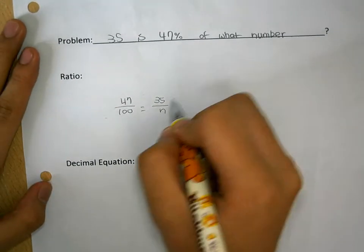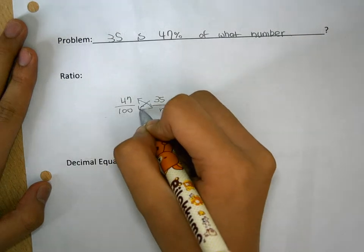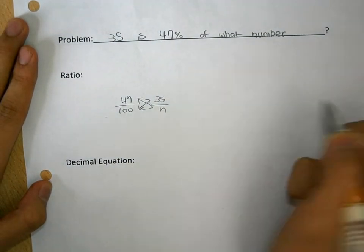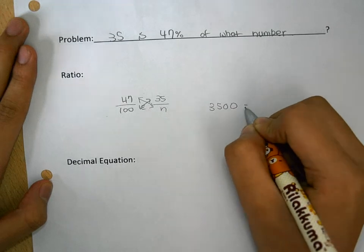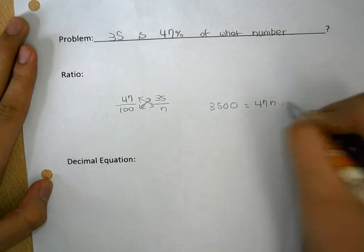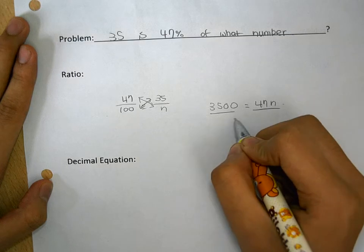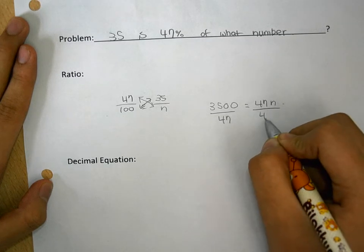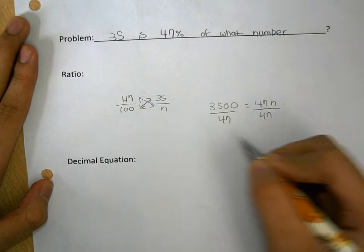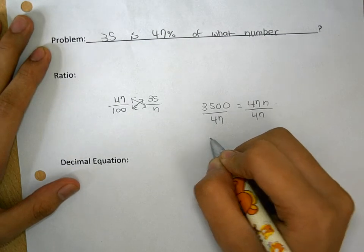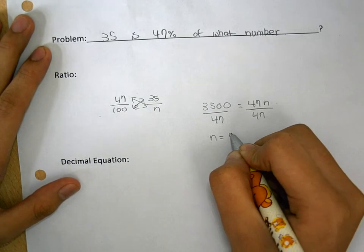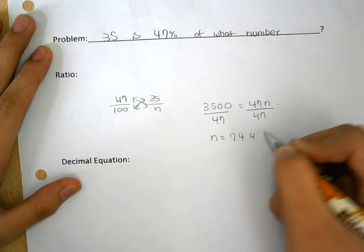And what I would do is cross multiply and then it would be 3500 is equal to 47n. I will divide both sides by 47 which makes n is equal to 74.47.